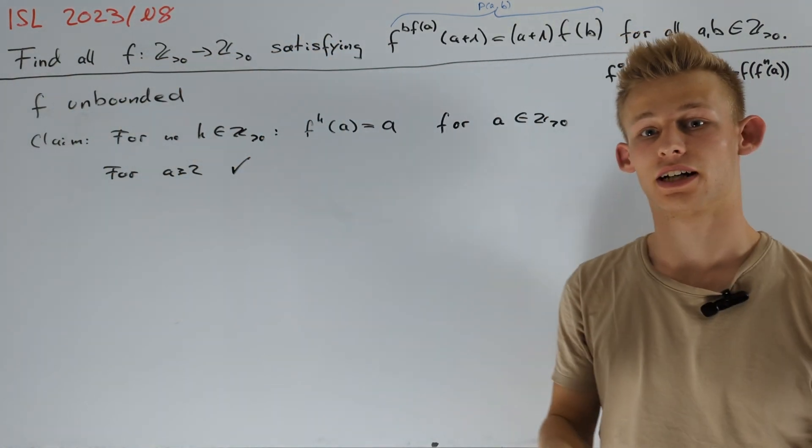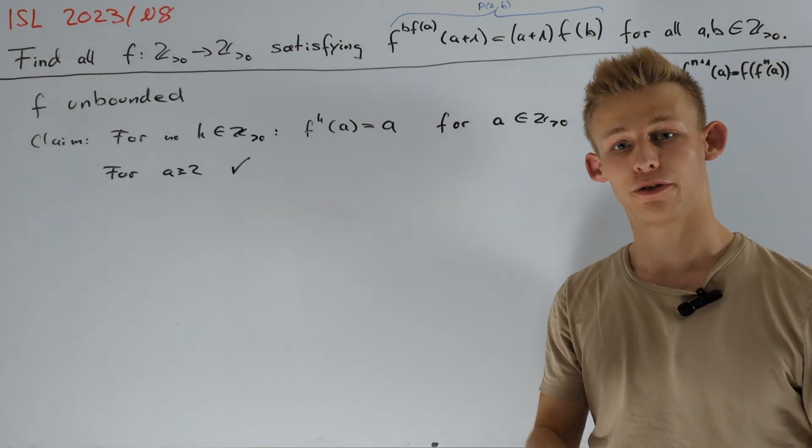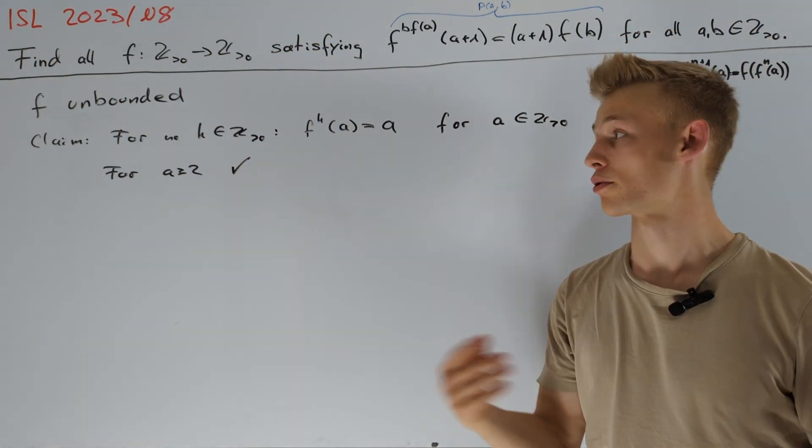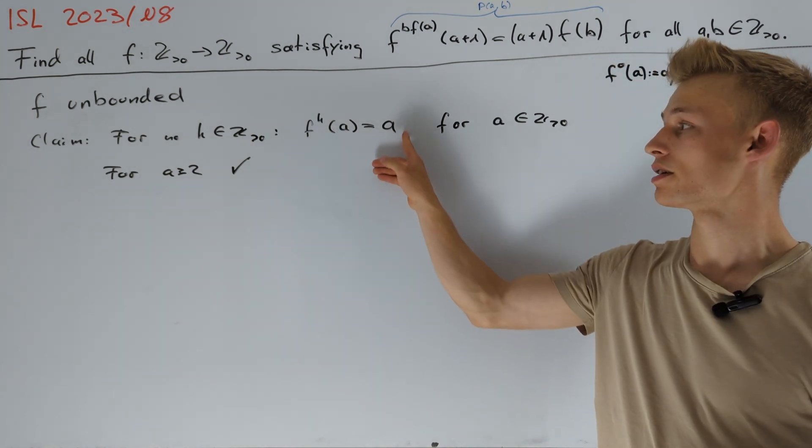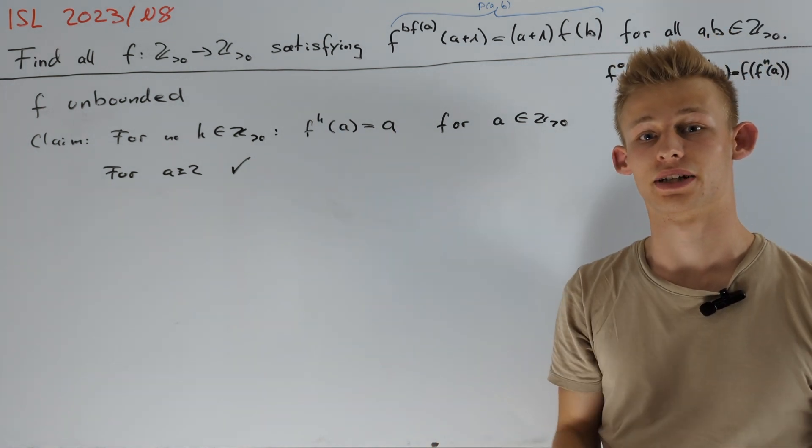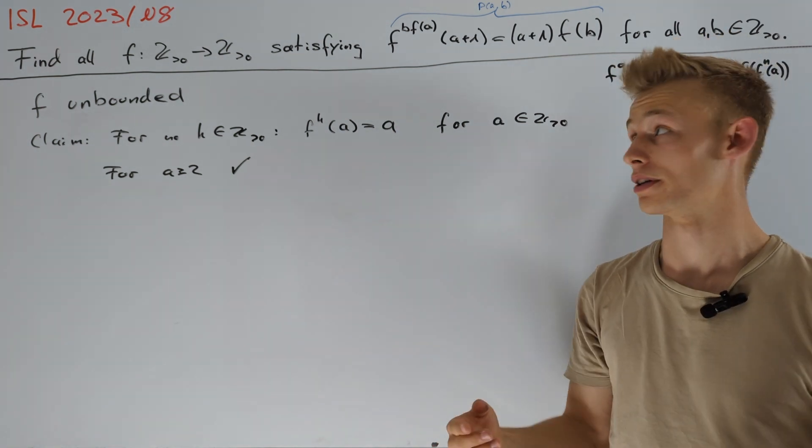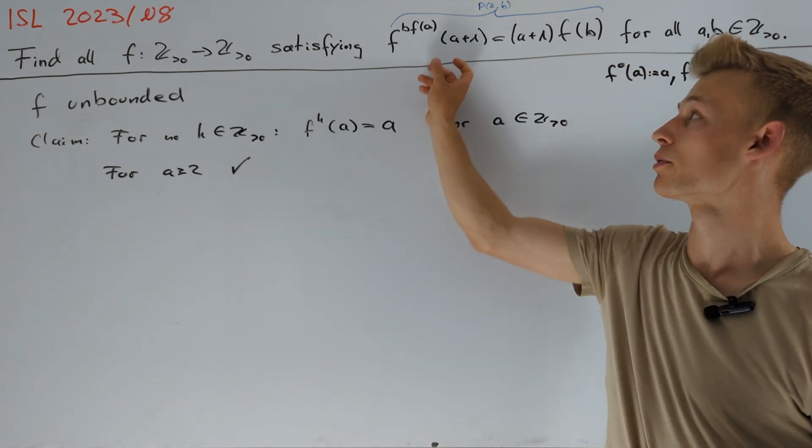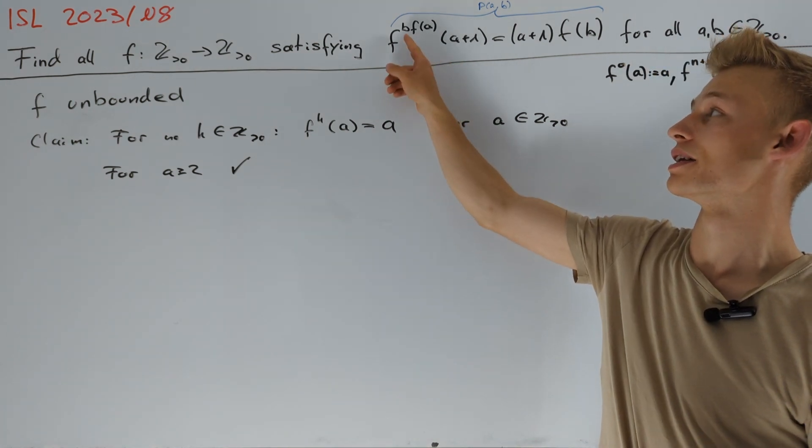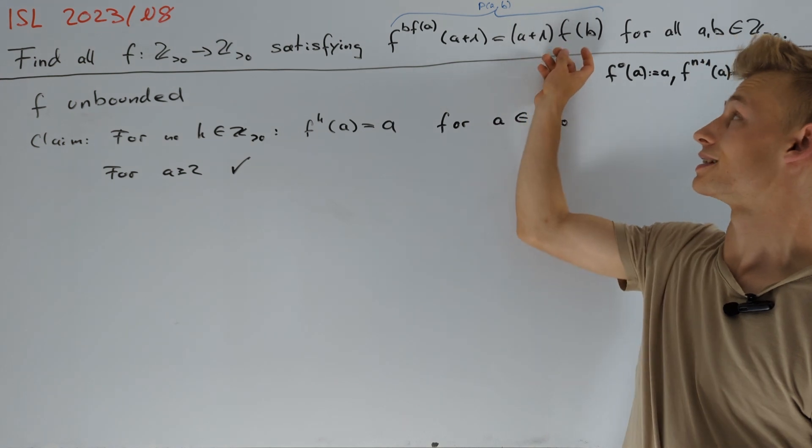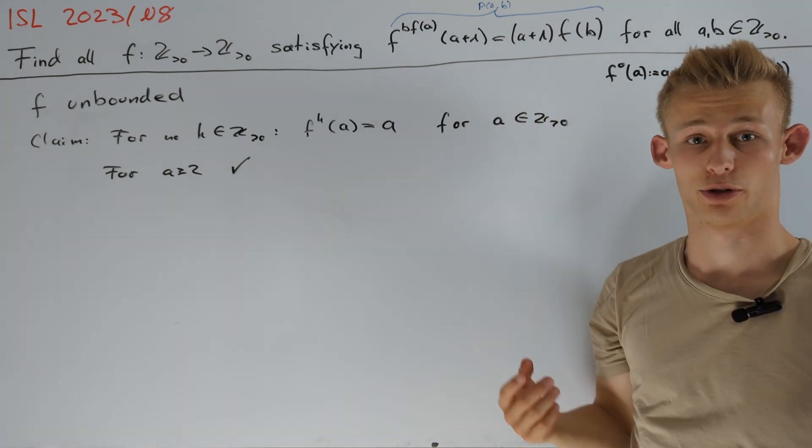Because if we take a look at the sequence a, f(a), f^2(a) and so on, then this equation would imply that this sequence is periodic and therefore bounded. But this gives us a bounded left hand side here independent of b. But as we have learned before, the right hand side is unbounded and therefore this is not possible.